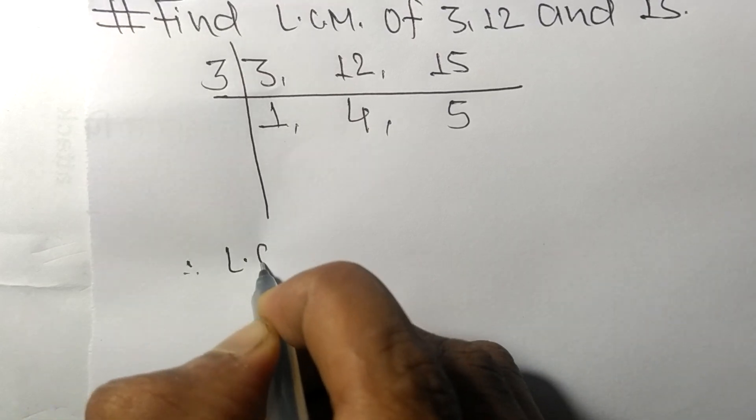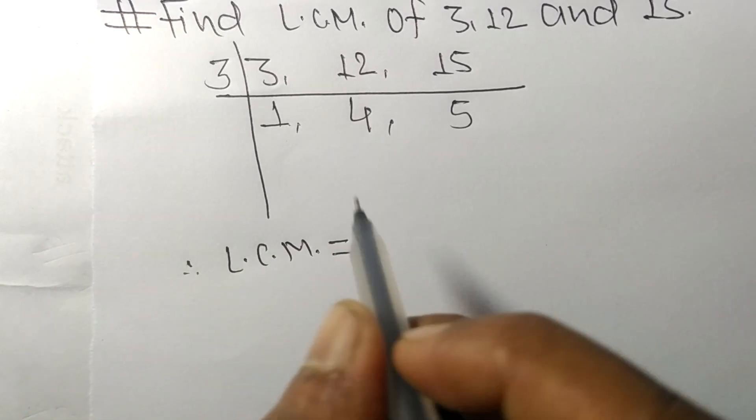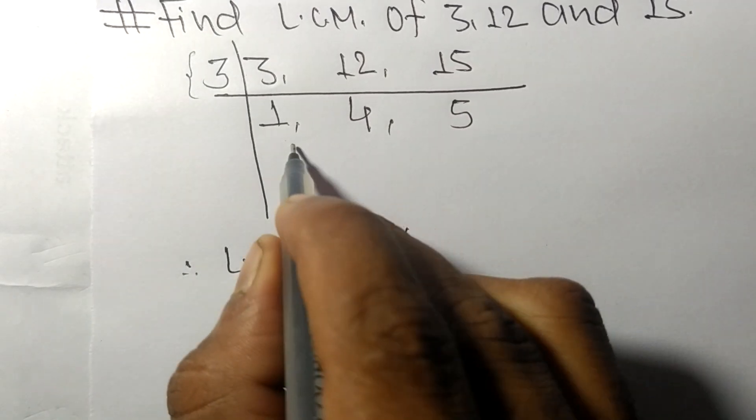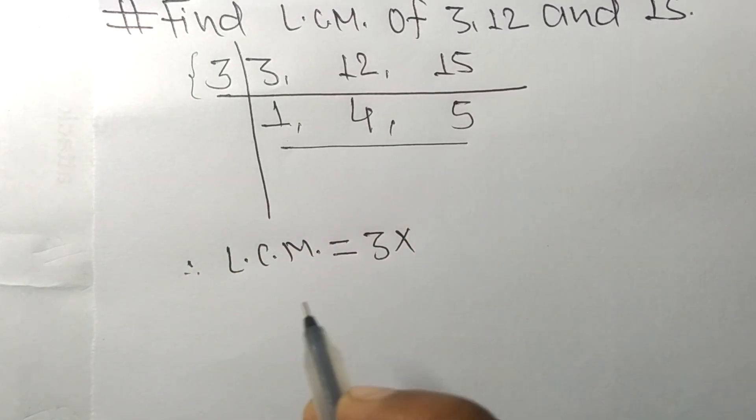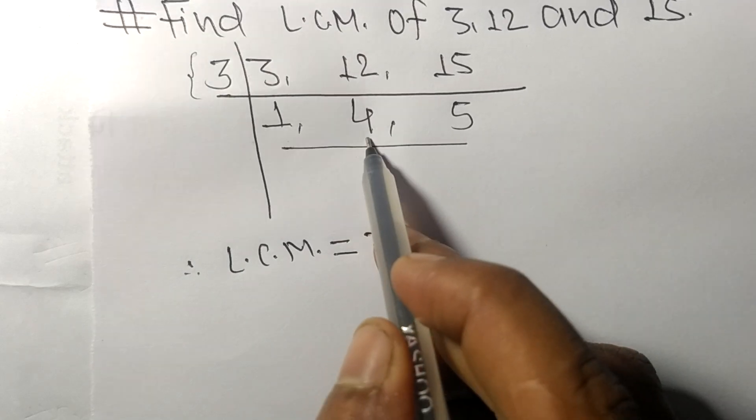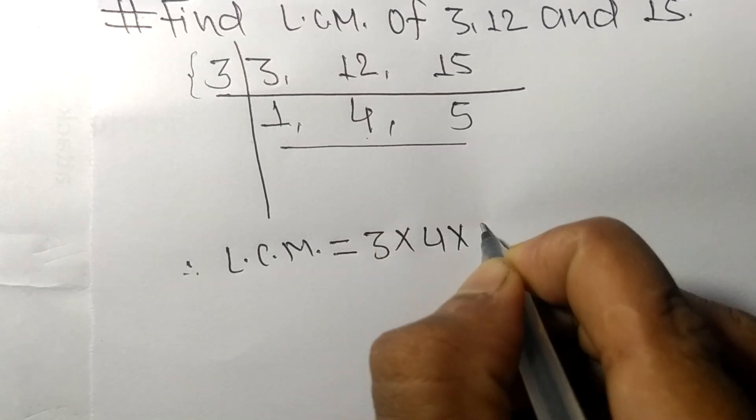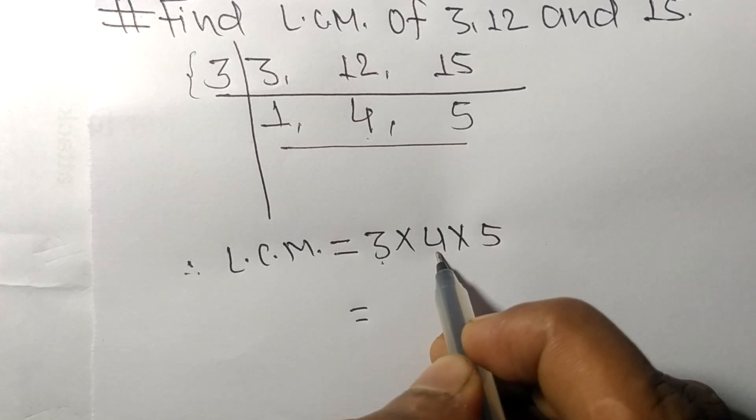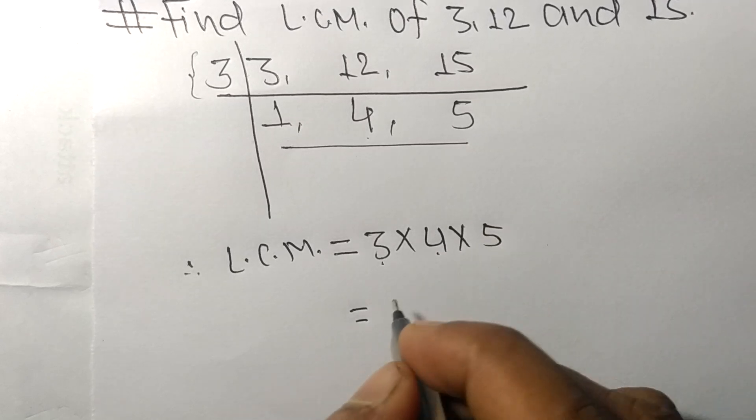Therefore, the LCM is equal to 3 from this side. From this side we choose the numbers greater than 1, that is 4 and 5. So 3 times 4 means 12, and 12 times 5 means...